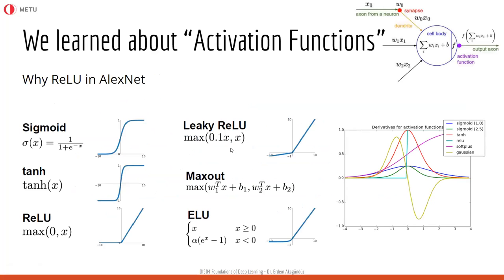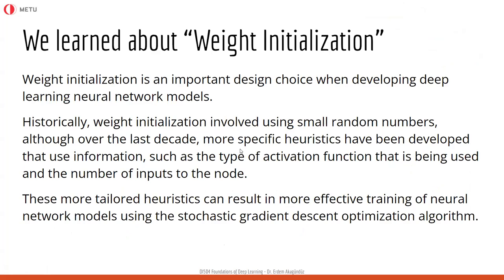All these activation functions were important — they gave artificial neural networks the ability to process non-linear decision boundaries. For different architectures we have seen different activation functions. ReLU is mainly used for image processing and vision applications after AlexNet, but the traditional ones like sigmoid and tanh are also used, and there are many versions of ReLU.